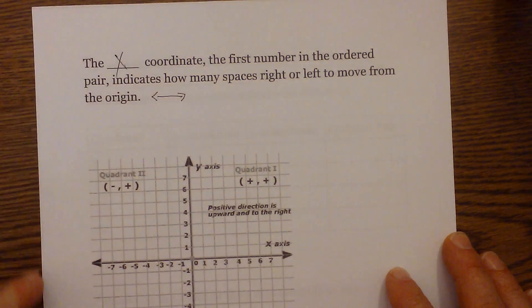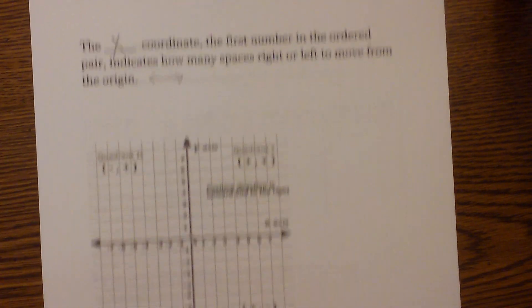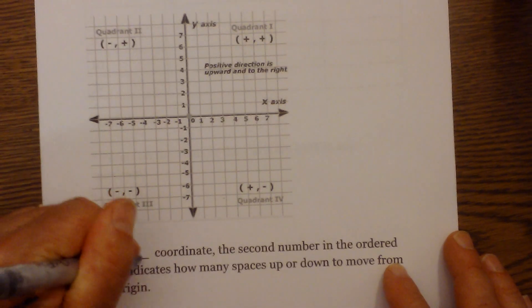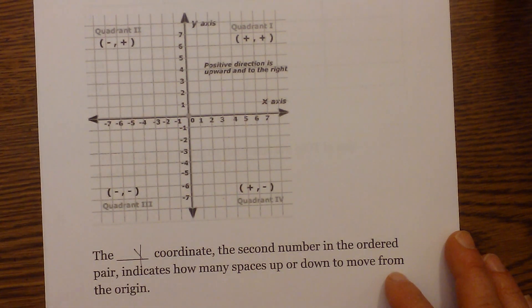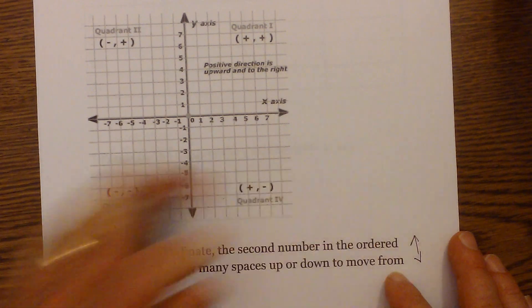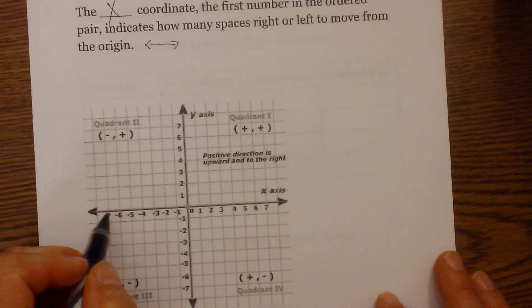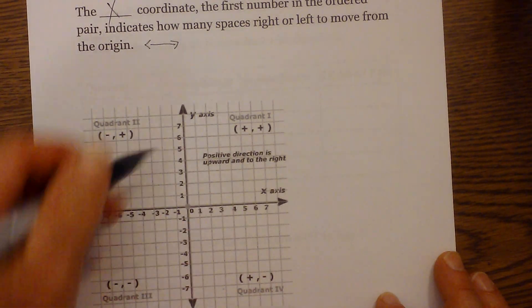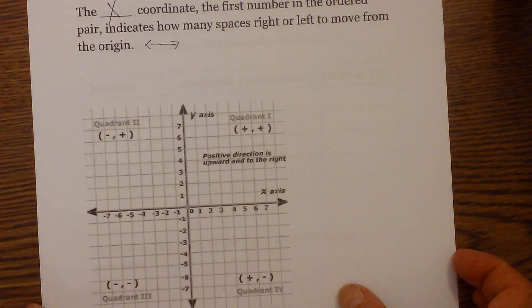Then the y coordinate is the second number and indicates how many spaces to move up or down. So x is running this way, horizontally. Y is running vertically.